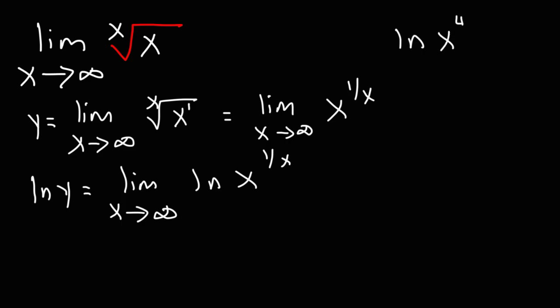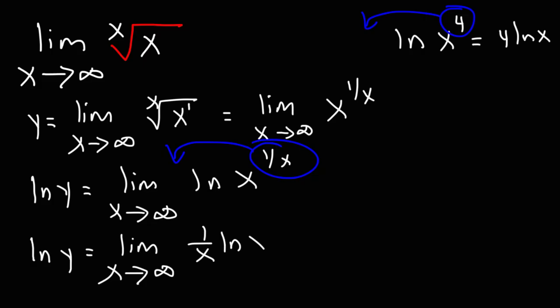For instance, ln x to the fourth power is equal to 4 times ln x. That's just one of the properties of logs. You could take the exponent and move it to the front. So, we're going to do the same thing here. We're going to take 1 over x and move it to the front. And, so, we're going to have ln y is equal to the limit as x goes to infinity 1 over x times ln x. And, we can write that as the natural log of x divided by x.